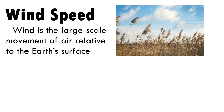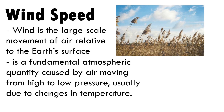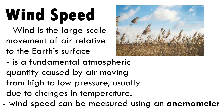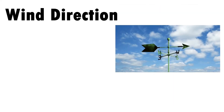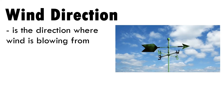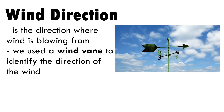Wind is the large-scale movement of air relative to the Earth's surface. Wind speed is a fundamental atmospheric quantity caused by air moving from high to low pressure, usually due to changes in temperature. Wind speed can be measured using an anemometer. Wind direction is the direction from which the wind is blowing, identified using a wind vane.